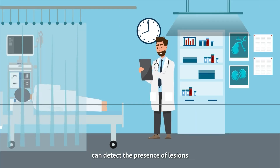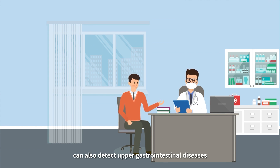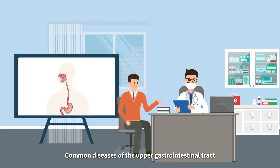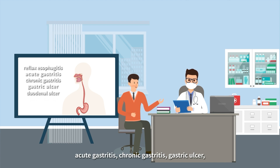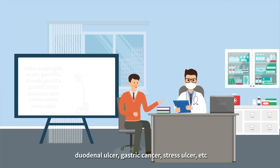If symptoms worsen, malignant changes may occur. An esophageal examination can detect the presence of lesions, and gastroenterological examination can also detect upper gastrointestinal diseases. Common diseases of the upper gastrointestinal tract include reflux esophagitis, chronic gastritis, gastric ulcer, duodenal ulcer, gastric cancer, and stress ulcer.